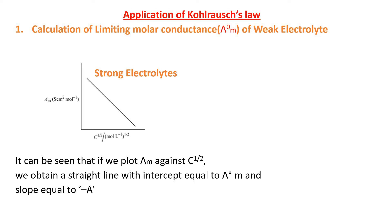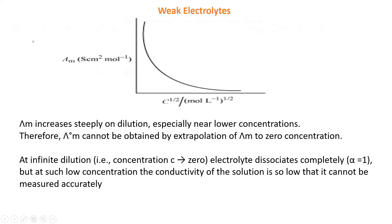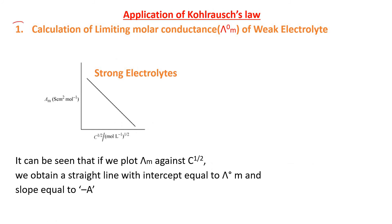In continuation to the last video, we'll now take applications of Kohlrausch's law. In this first application we'll see the calculation of limiting molar conductivity of a weak electrolyte. For strong electrolytes, if we plot molar conductance against concentration, we get a straight line with decreasing order. From this straight line, by using extrapolation, we can easily calculate the molar conductance.